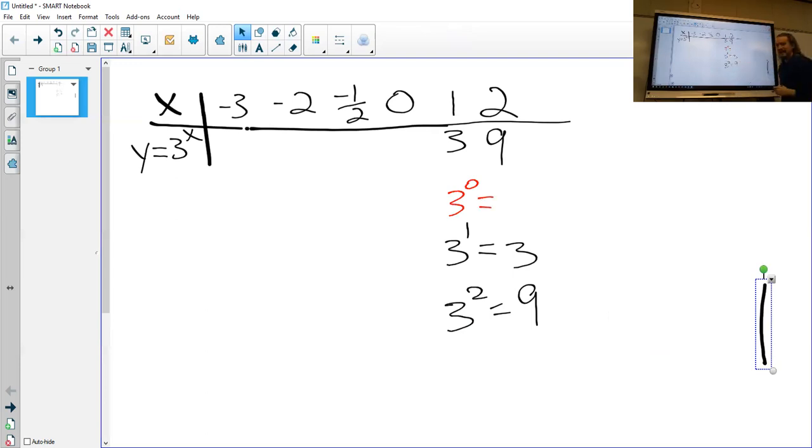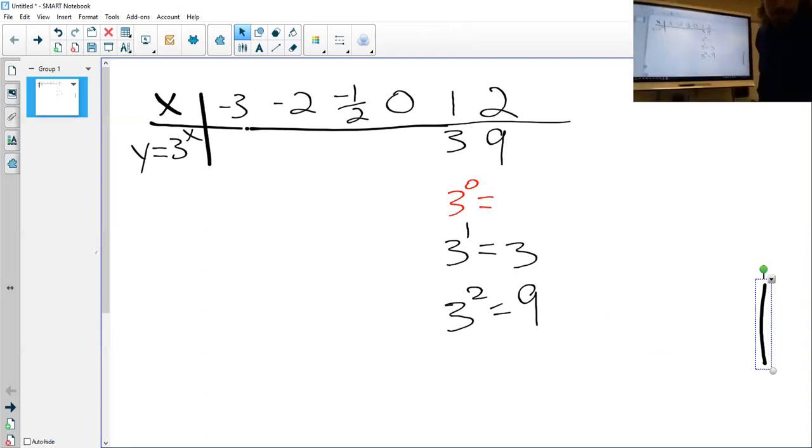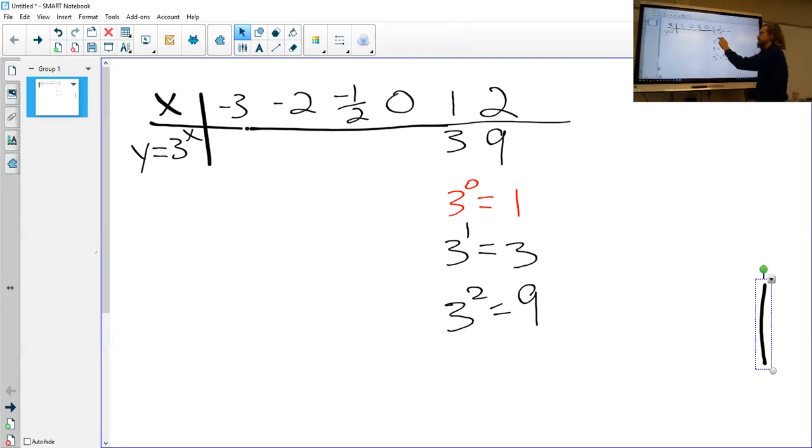And we remember that anything raised to the 0 power, anything at all. Anything raised to the 0 power is always equal to 1, no matter what the number is, if it's to the 0 power, the answer is 1.